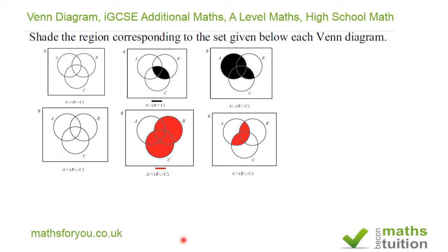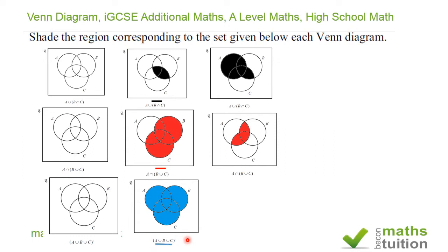Right, okay, and the third one says A union B union C prime. So the diagram for A union B union C, do what's in bracket first. A union B union C is this one. So that's A union B union C. Now for A union B union C prime, we don't want anything in A, B, and C. So now A union B union C prime is this one here.